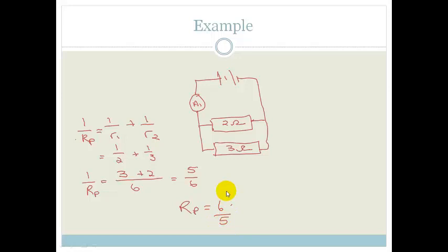the total resistance of this parallel component is actually 6 divided by 5, which if you put in your calculator, 6 divided by 5, it comes to 1 point, if you don't know it already, it comes to 1.2 ohms.